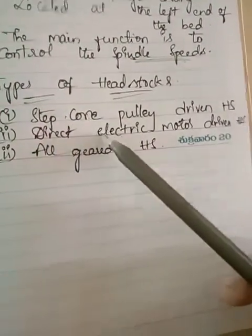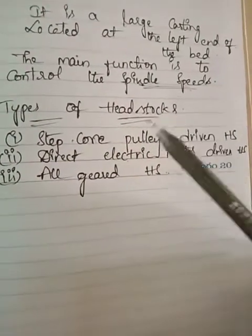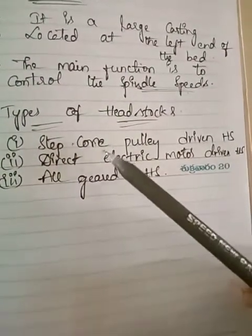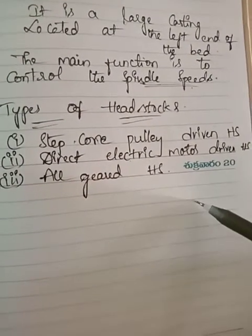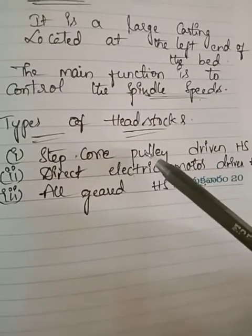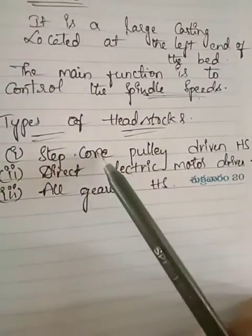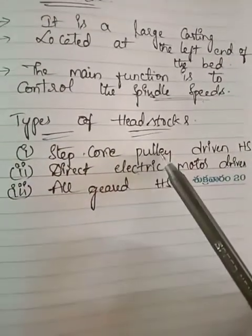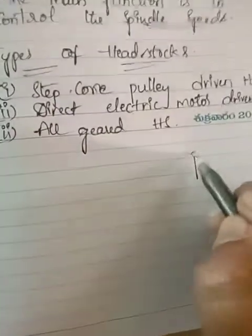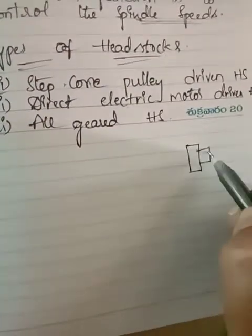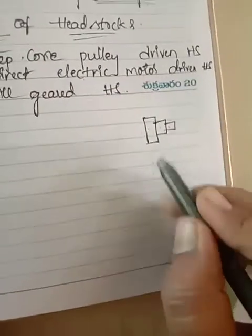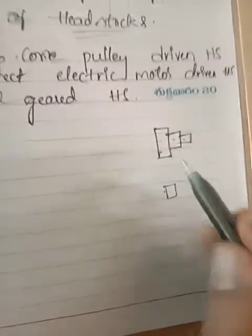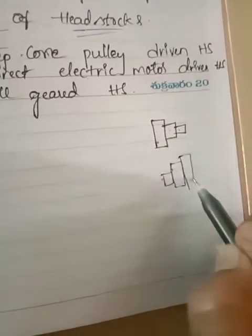The three types of headstocks are: first, step cone pulley driven headstock; second, direct electric motor driven; and third, all-geared headstock. In the step cone pulley driven type, the motor is on the left side of the headstock and uses a step cone pulley.